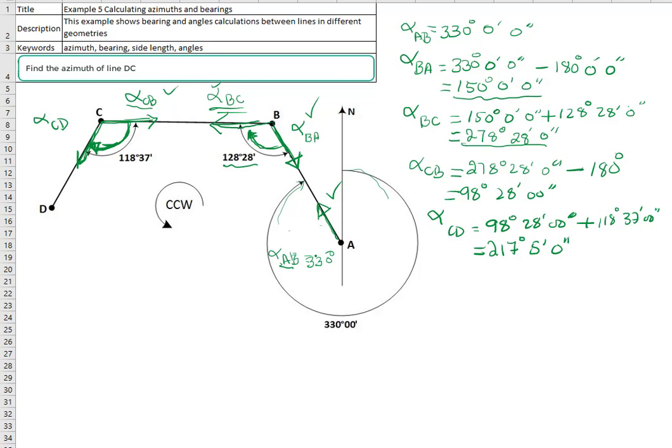Now if we want the DC, the DC here, it is alpha DC. Alpha DC is the back azimuth of alpha CD. Alpha CD here is more than 180, it is 217 degrees, 5 minutes, so we subtract 180 degrees and this will end up equals minus 180, and this is 37 degrees, 5 minutes, and 0 seconds. End of solution.